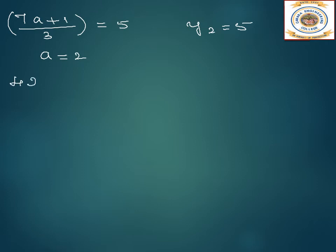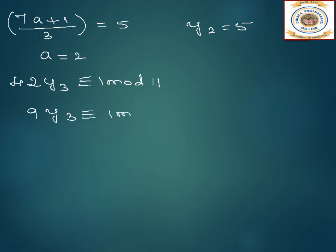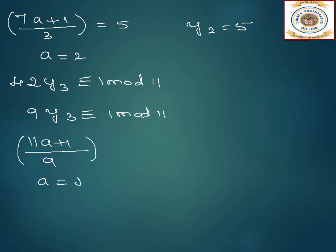Next we find y3. Capital M3 is 42, and y3 ≡ 1 mod 11. Since 42 is greater than 11, we do 42 mod 11, which yields 9. So 9·y3 ≡ 1 mod 11. Writing (11a + 1) / 9, when a equals 4 we get 5. Therefore y3 equals 5.